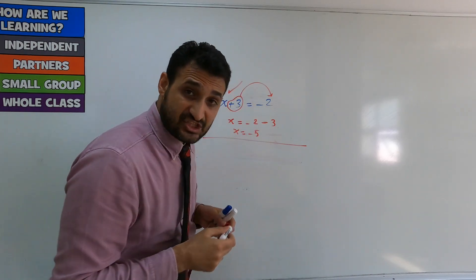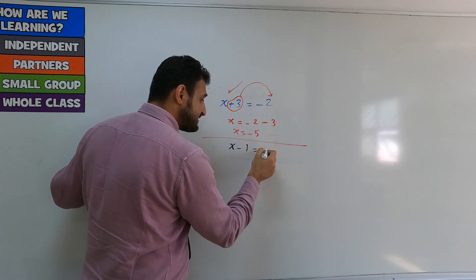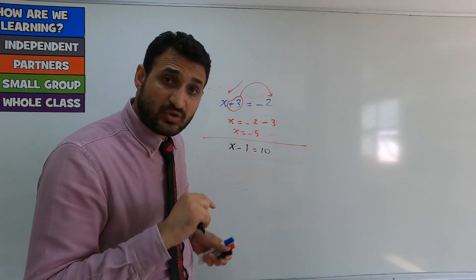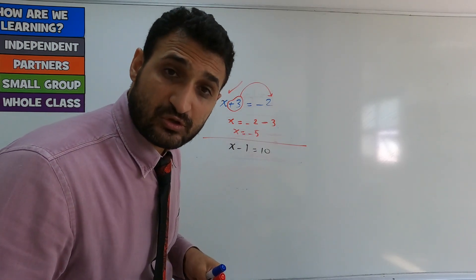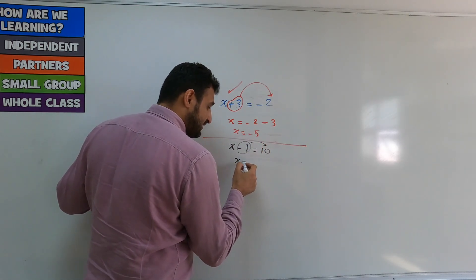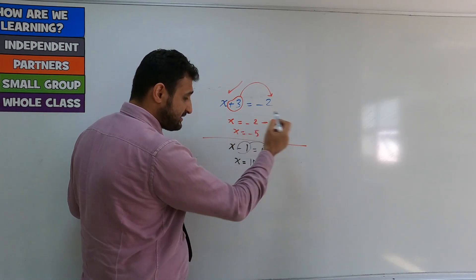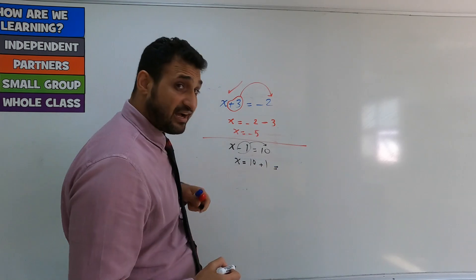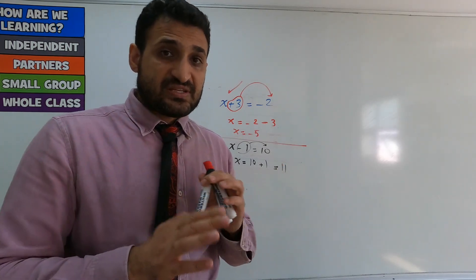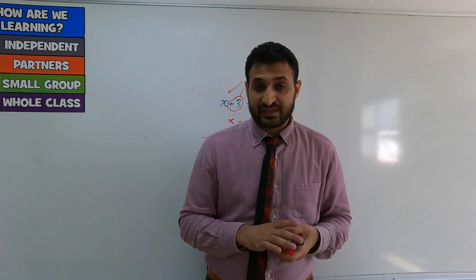What if there's subtraction, like x minus 1 equals 10? Same thing — instead of adding 1 to both sides, move the negative 1 to the other side and it becomes positive 1. x is already isolated; 10 stays as it is and negative 1 becomes positive 1. So x equals 11. This is all about one-step equations.